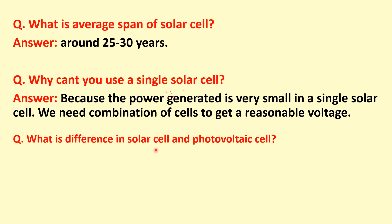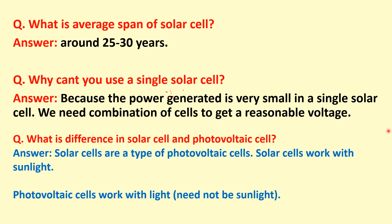What is the difference between a solar cell and a photovoltaic cell? Solar cells are a type of photovoltaic cells. Solar cells work only with sunlight, whereas photovoltaic cells work with any kind of light — it need not be sunlight; any photons can work for a photovoltaic cell.